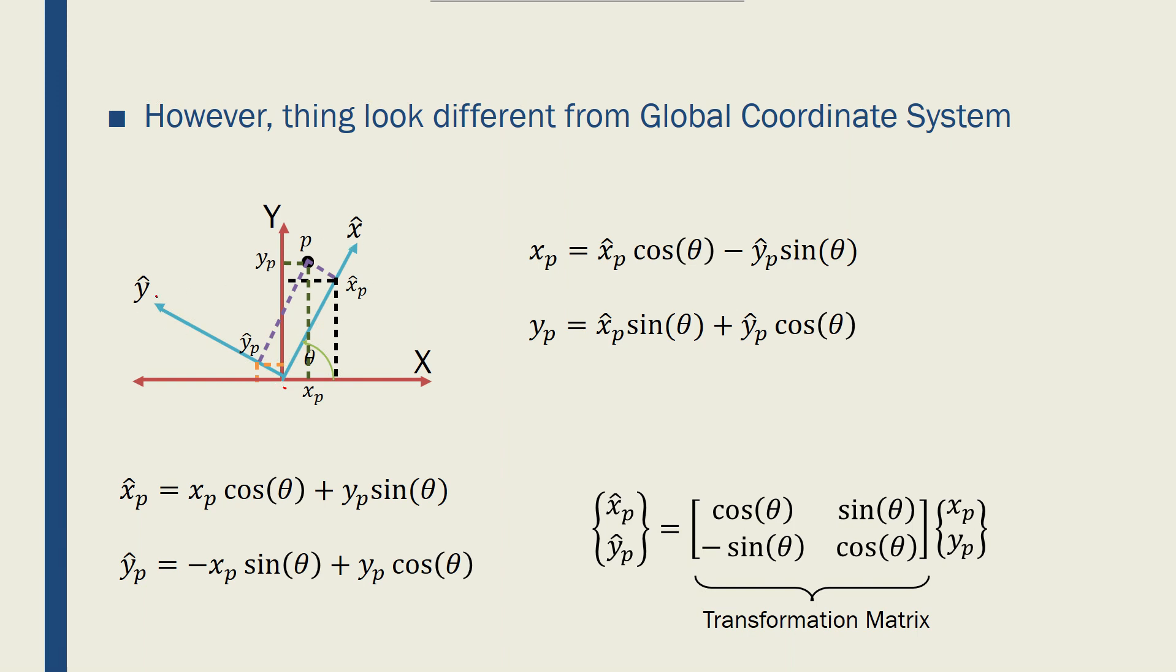And we have an arbitrary point P in space. Now, we want to see its location both in the local and global coordinate systems. So, in x hat, y hat, I was meaning to write y over there. Let me erase it. And let's switch back to pen.